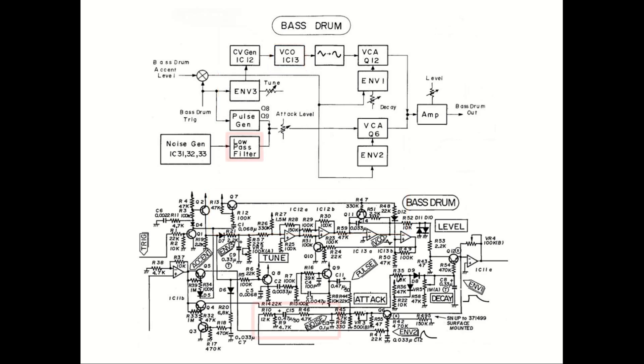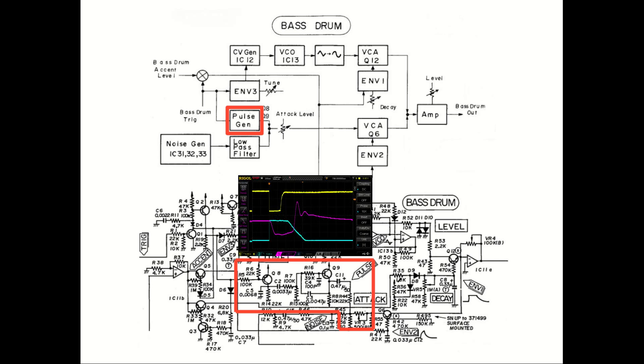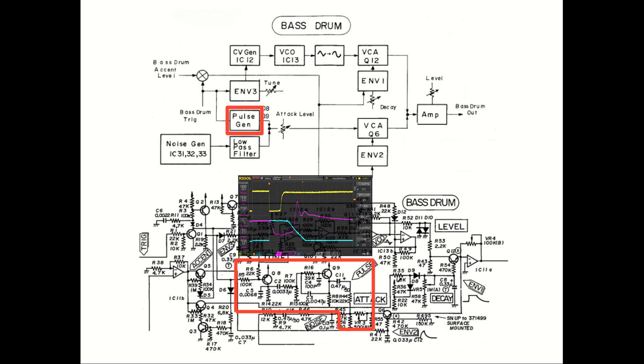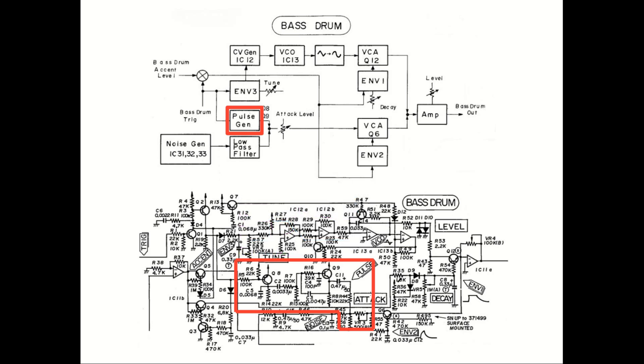Next we have the low-pass filter that shapes the frequency response of the noise generator a bit. The level is also adjusted because the output of the noise generator is way too loud. The pulse generator is my favorite part of the design. It takes the input trigger signal and shapes it into a complex pulse that is mixed together with the noise, and this forms the front of the kick sound. The attack knob controls how much of this signal that is sent to the VCA.